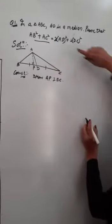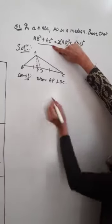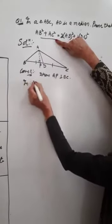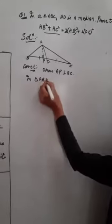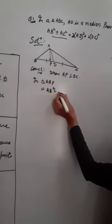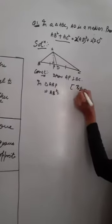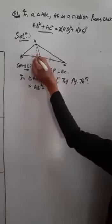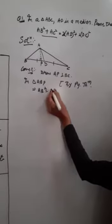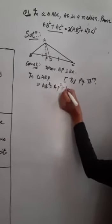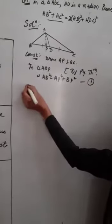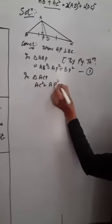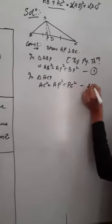We need AB² + AC² and BD² on the left-hand side, so we consider triangle ABP and triangle ACP. In triangle ABP, applying the Pythagoras theorem with the right angle at P: AB² = AP² + BP². Similarly, in triangle ACP: AC² = AP² + PC².